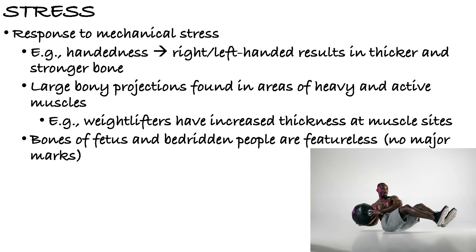Mechanical stress also affects bone. For example, handedness: from an x-ray alone, you can tell whether someone is right- or left-handed because the dominant hand has thicker, stronger bone. If you have a fracture or sprain on your dominant hand and struggle to use your non-dominant hand, it's because the non-dominant hand is not as thick or as strong. Weight lifters show increased bone thickness at muscle sites.